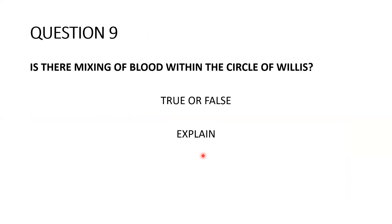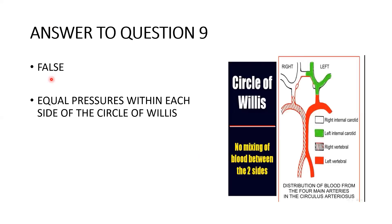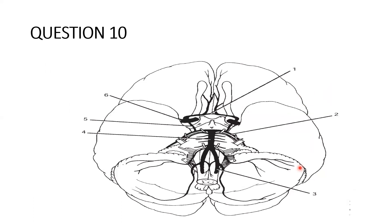Question nine: is there mixing of blood within the Circle of Willis — true or false? The answer is false. Looking at the diagram, the blood on the right side is not mixing with the blood on the left side, simply because the pressures within the left and right arterial sides are equal. Once the pressures are equal, blood cannot move from one side to the other, so there is no mixing of blood.